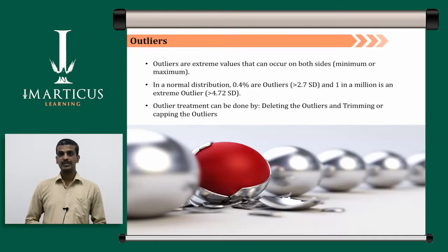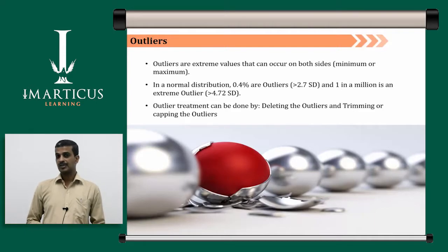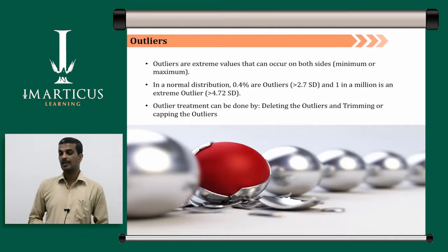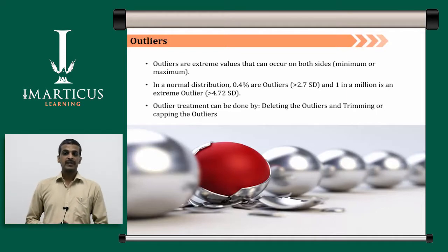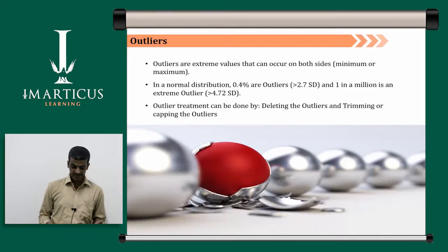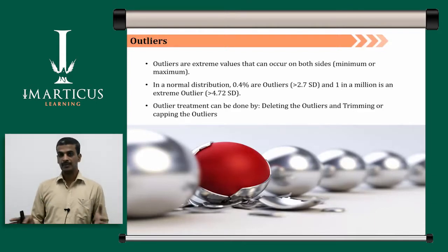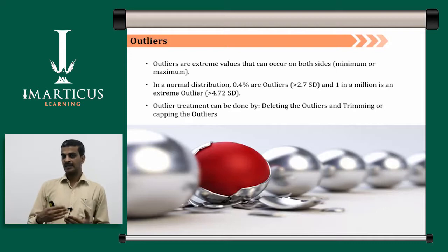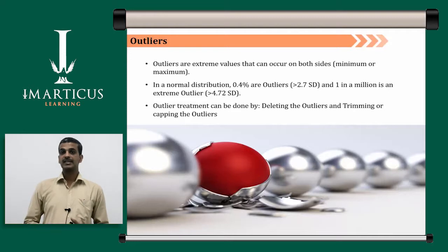Outliers are extreme values that can occur on both sides — extremely low or extremely high. Values that do not match most other values are called outliers. In a normal distribution, 0.4% of values are outliers. Anything greater than 2.7 standard deviations is an outlier, and values greater than 4.7 SD in 1 million are extreme outliers. Outlier treatment can be done by deleting or trimming/capping the outliers, setting an upper and lower cap to exclude extreme values.